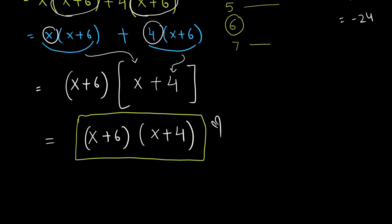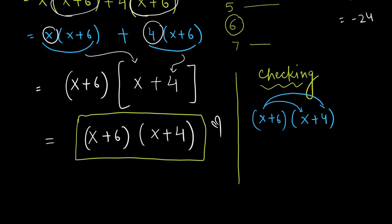Now if you need to check the answer, for checking, multiply them back and you get x² + 10x + 24, which was our question again. So this was the checking method.